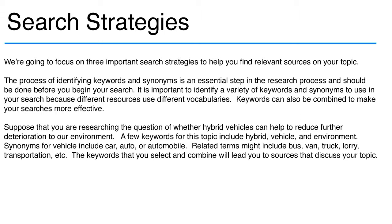Keywords can also be combined to make your searches more effective. Suppose that you are researching the question of whether hybrid vehicles can help to reduce further deterioration of the environment. A few keywords for this topic include hybrid, vehicle, and environment. Synonyms for vehicle include car, auto, or automobile. Related terms might include bus, van, truck, lorry, transportation, etc. The keywords that you select and combine will lead you to sources that discuss your topic.